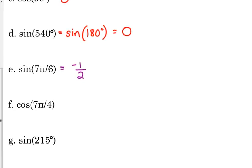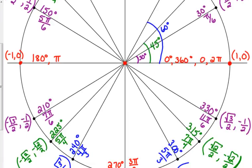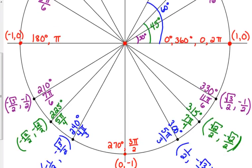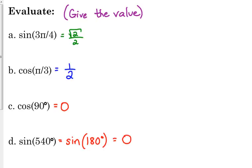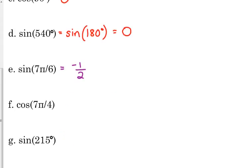The cosine of 7 pi over 4. 7 pi over 4 is the fourth quadrant. We want the x coordinate, so that's square root 2 over 2, positive. And then, square root 2 over 2.